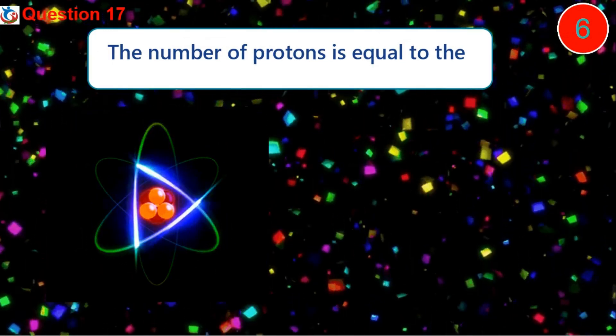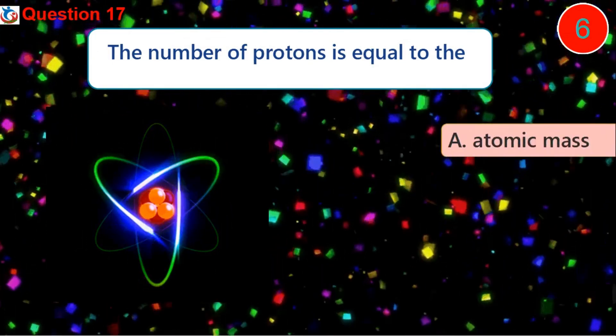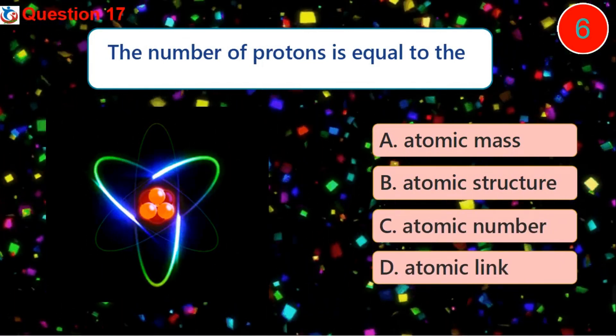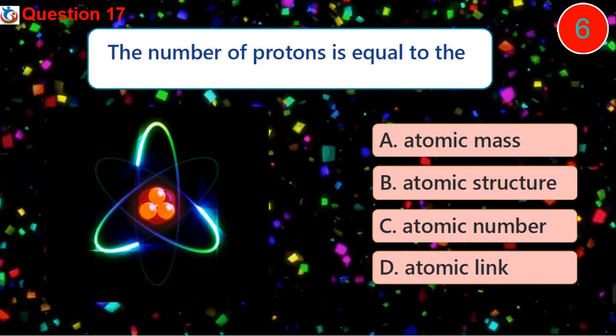Question 17. The number of protons is equal to the dash. A. Atomic mass B. Atomic structure C. Atomic number D. Atomic link.